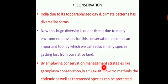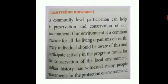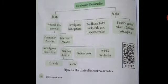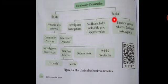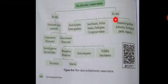Here is a flowchart showing how we want to conserve biodiversity. Biodiversity conservation can be mainly classified into in situ conservation and ex situ conservation. 'In situ' means inside the area, and 'ex situ' means outside the area.